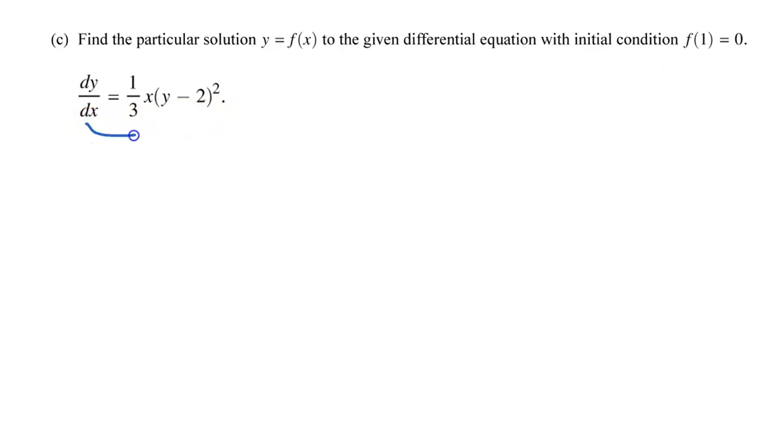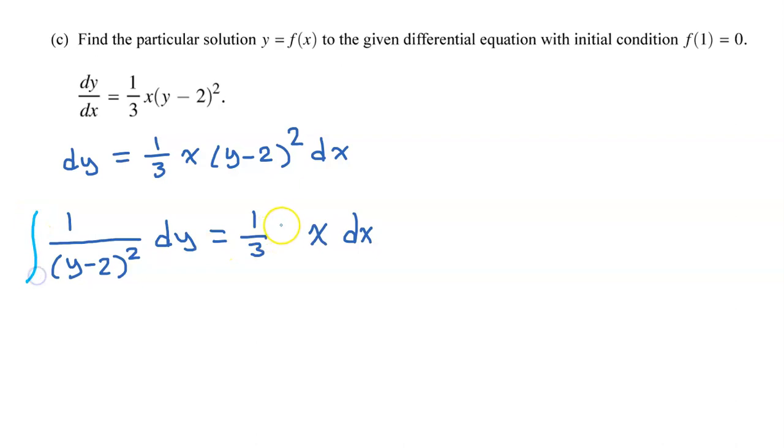To start off, let's move the dx over here. I moved the dx over by multiplying both sides by dx. Now, let's take this factor and move it over here by dividing both sides by (y minus 2) squared. Now that I have all the y factors on the left and all the x factors on the right, I can integrate both sides of this equation.